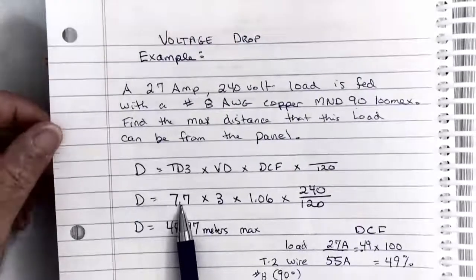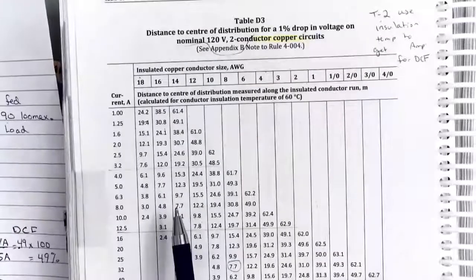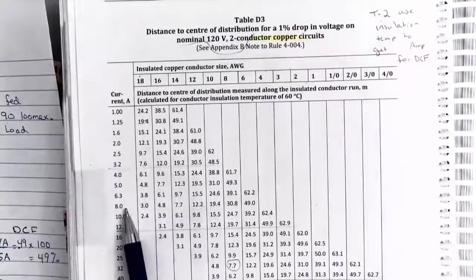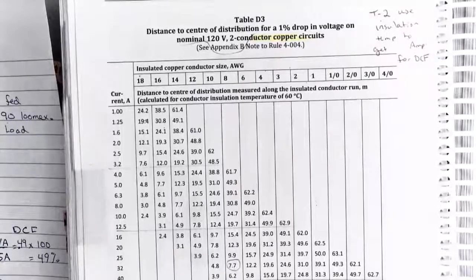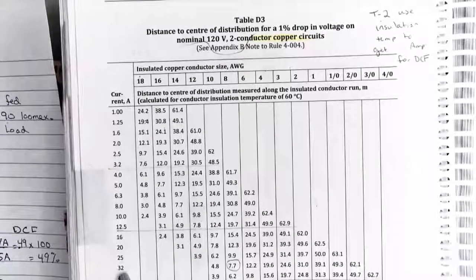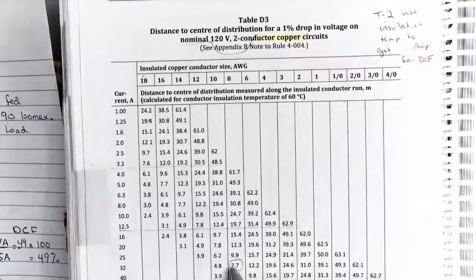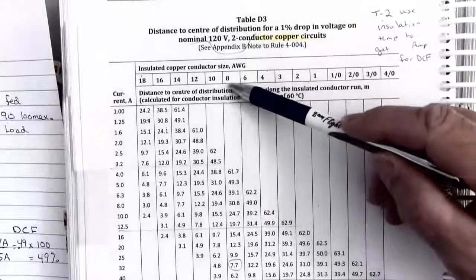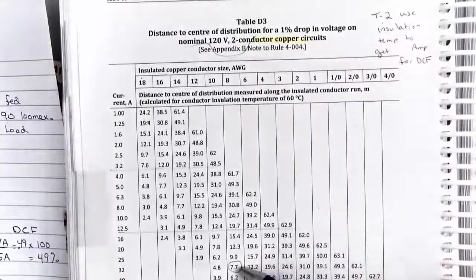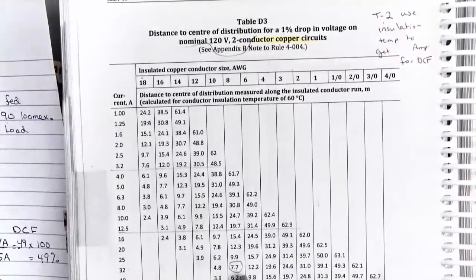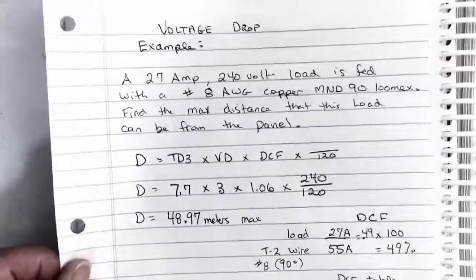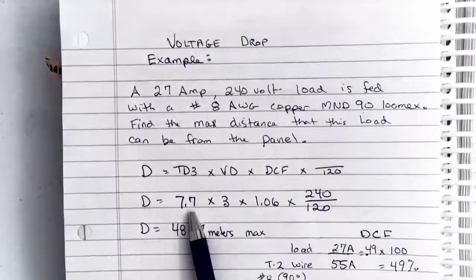So to find the distance from table D3, what we do is we know that we were given a 27 amp load. So running down the left hand side of table D3, I want to go to a number that's larger than 27. So my first choice is 32. And it told me that I was going to be using a number 8 conductor. And if you look up here, my number 8 conductor matches up with my 32 amp load. And this number here, the 7.7, is now what we call the meters one way that we're allowed to go, and it's our basic number from table D3. So remember 7.7, and that's what I put in here on table D3, 7.7.